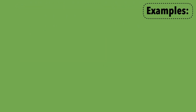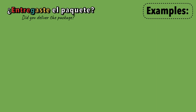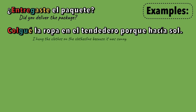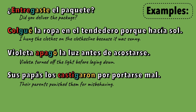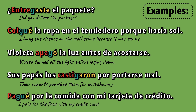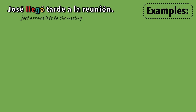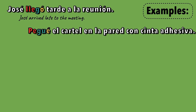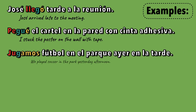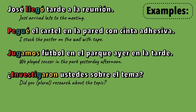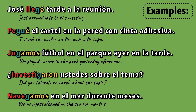And here are some examples of the verbs in sentences. ¿Entregaste el paquete? Colgué la ropa en el tendedero porque hacía sol. Violeta apagó la luz antes de acostarse. Sus papás los castigaron por portarse mal. Pagué por la comida con mi tarjeta de crédito. José llegó tarde a la reunión. Pegué el cartel en la pared con cinta adhesiva. Jugamos fútbol en el parque ayer en la tarde. ¿Investigaron ustedes sobre el tema? Navegamos en el mar durante meses.